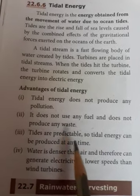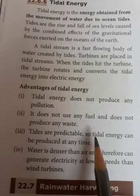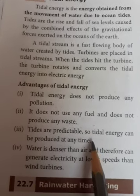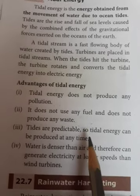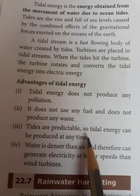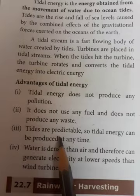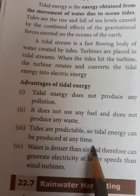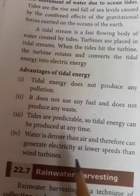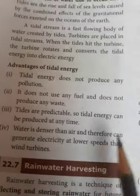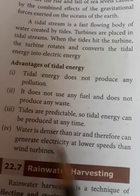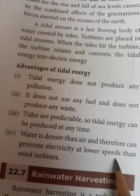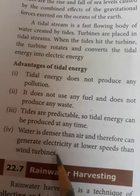Number three: tides are predictable. Tides are continuously occurring, so we can use this as a resource to generate electricity at any time — making it a continuous source. Additionally, water is denser than air, therefore it can generate electricity at lower speeds than wind turbines.